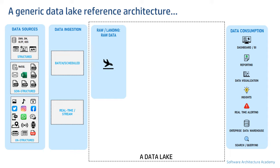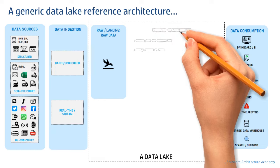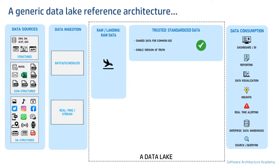The next layer is the trusted zone. Two key activities take place here: first, data modeling, and second, data standardization. Data here is also structured. This layer holds data that serves as a single source of truth.